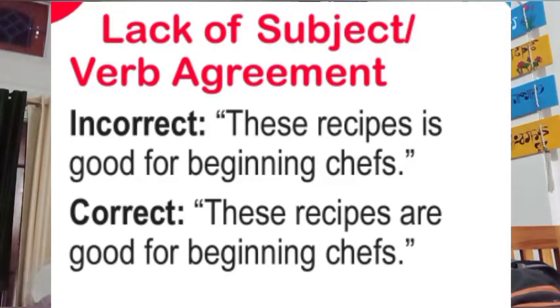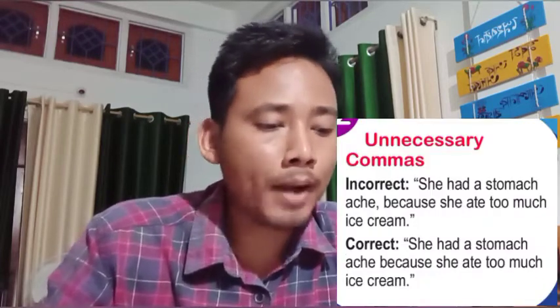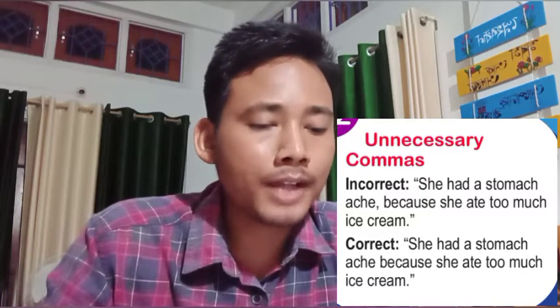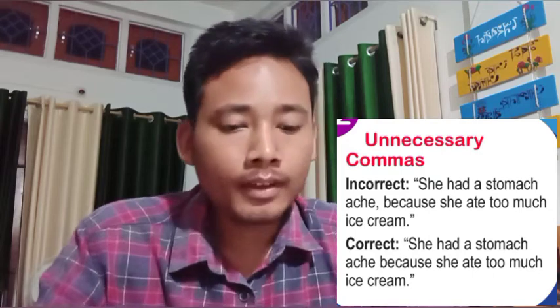Number three: unnecessary commas. We often use unnecessary commas in our writing, especially in exams when we are in a hurry. For example: 'She had a stomachache, because she ate too much ice cream.' The comma before 'because' is unnecessary and incorrect. The correct version is: 'She had a stomachache because she ate too much ice cream.' Try to avoid this kind of grammatical mistake.